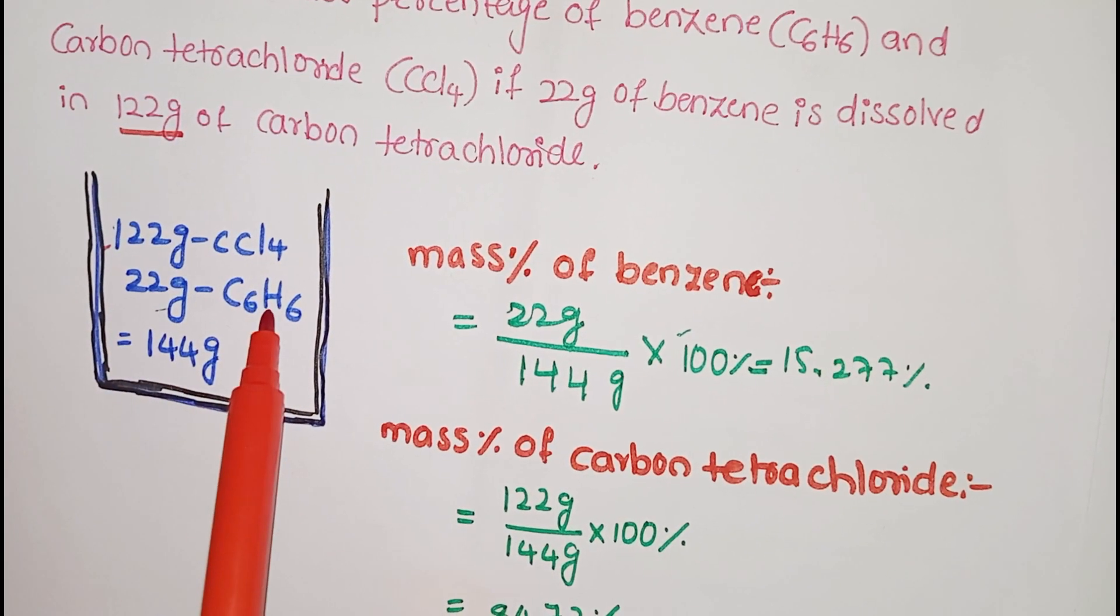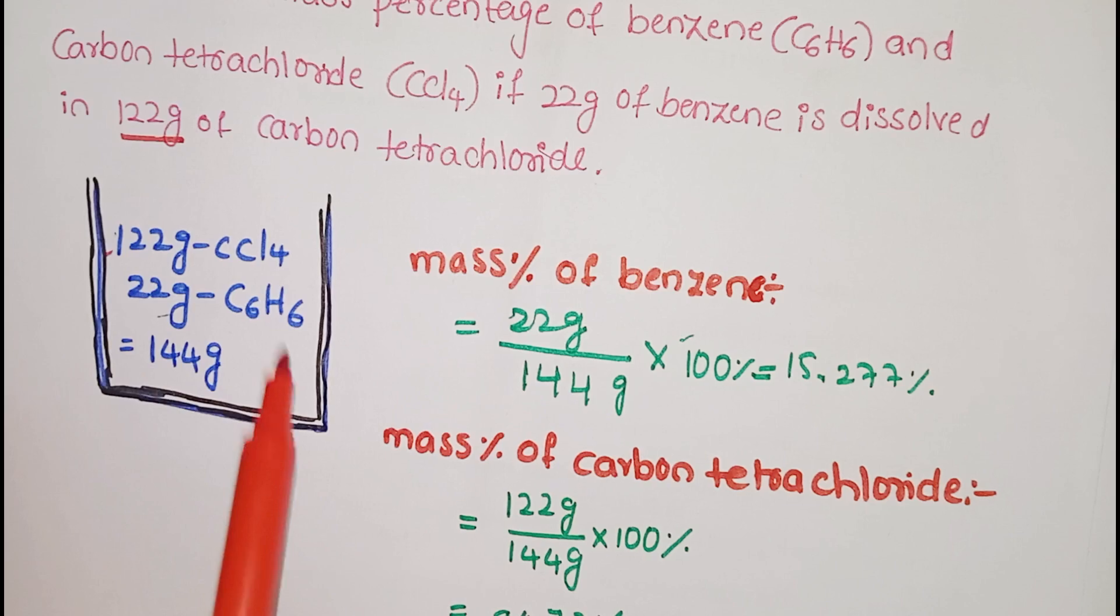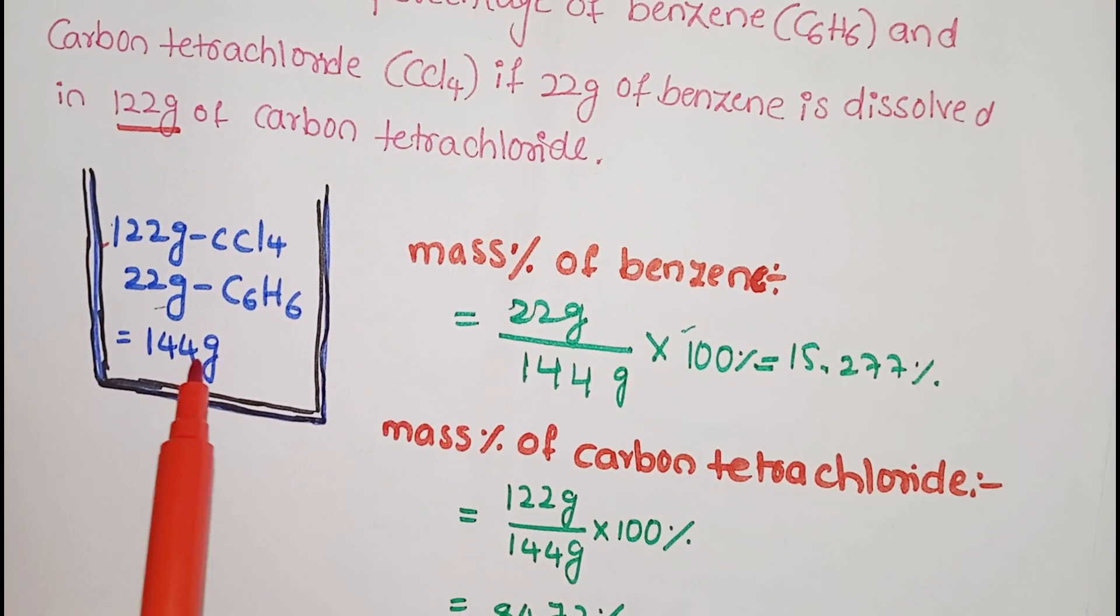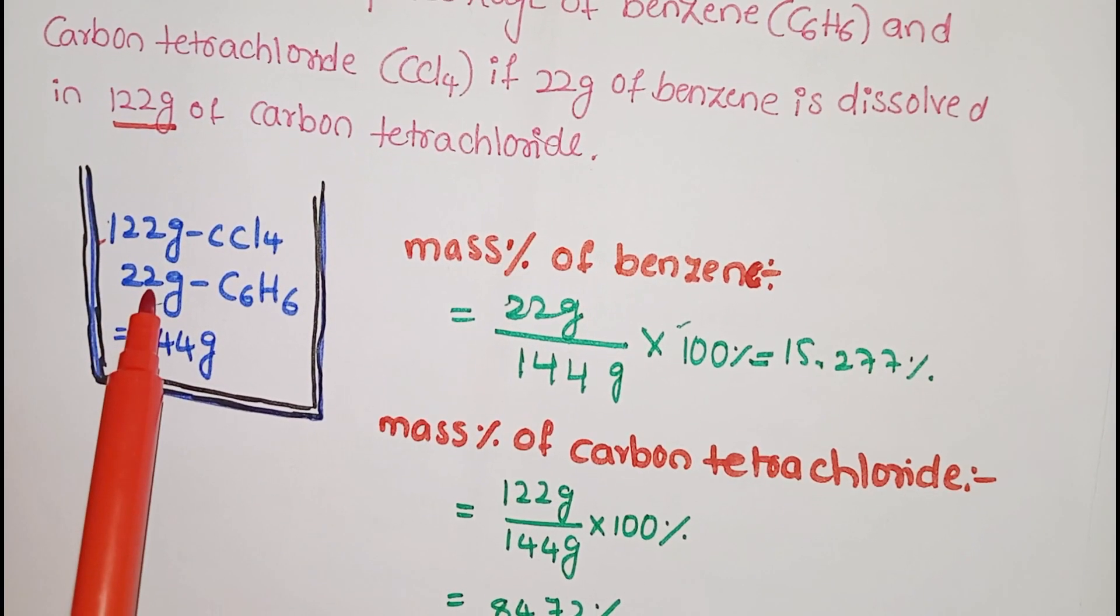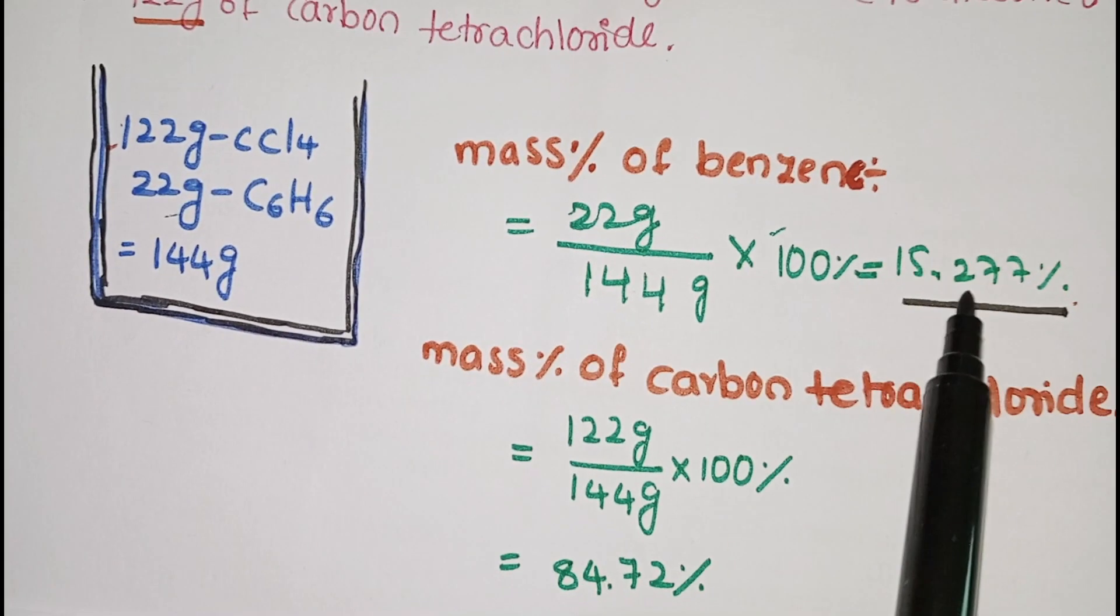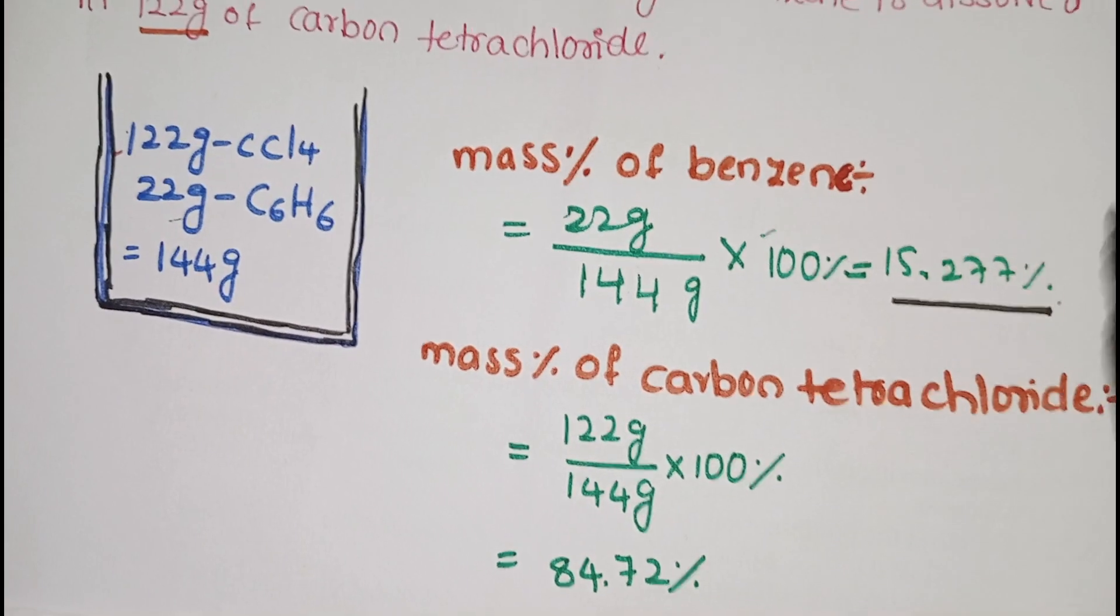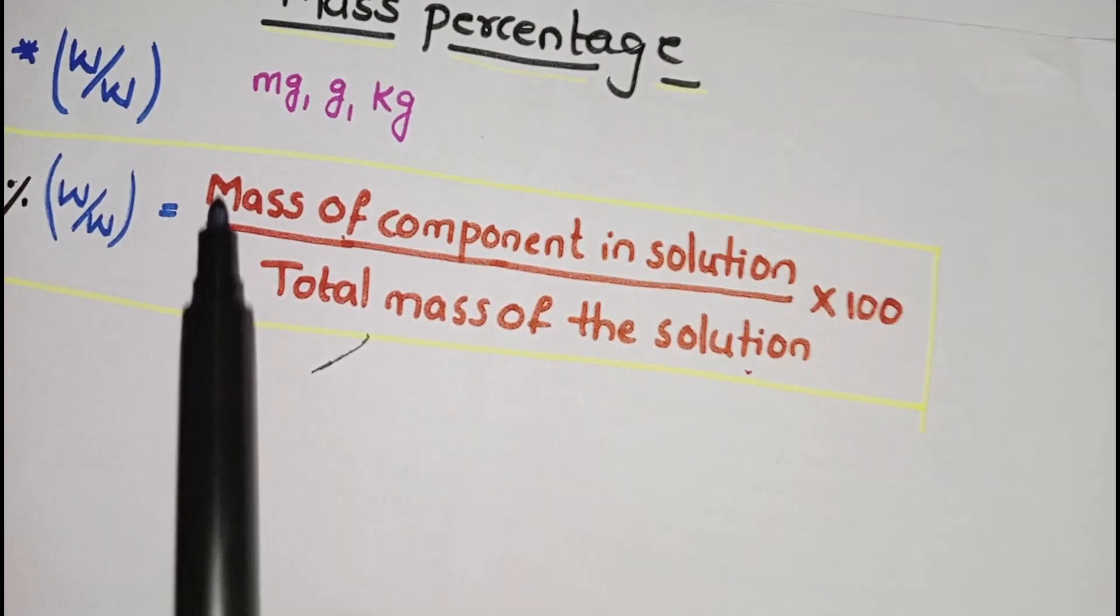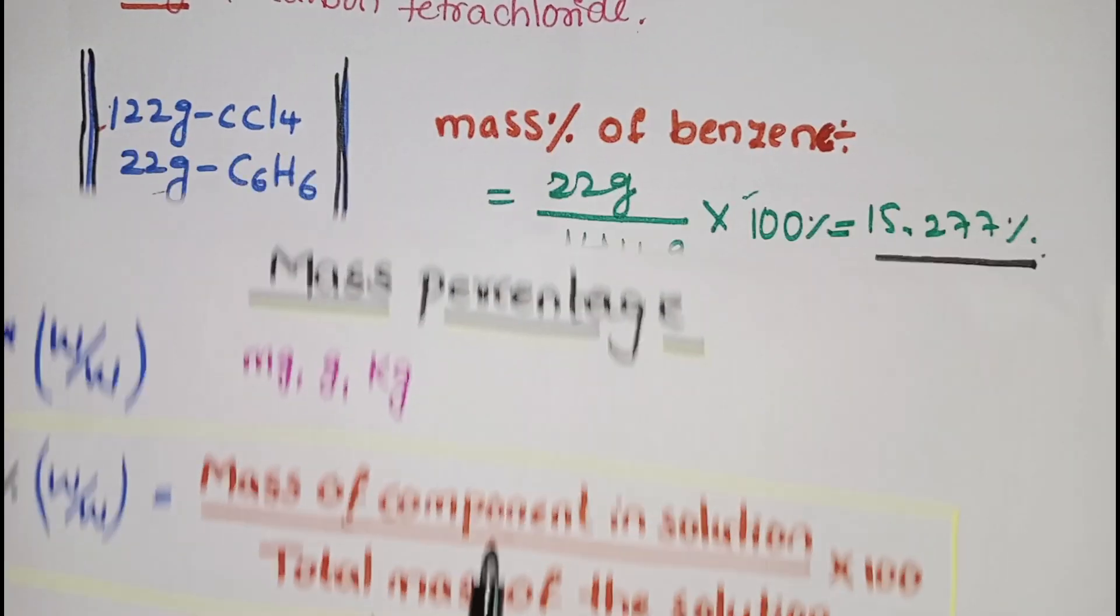Now total mass of solution becomes 144 grams. 122 plus 22 equals 144 grams. This is the calculation. Mass percentage of benzene: let's see the formula. Mass of component—what is the component here? Benzene.